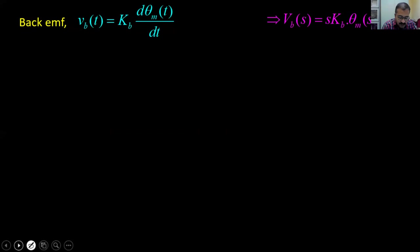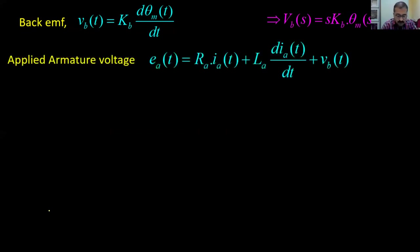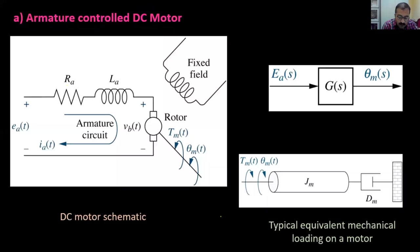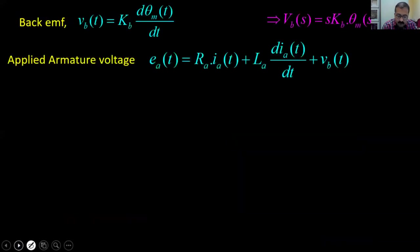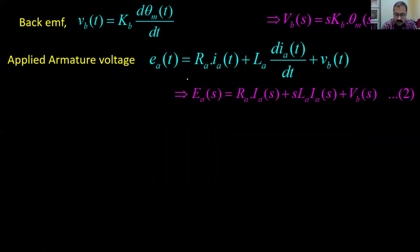The applied armature voltage Ea(t) equals Ra·Ia + La·dIa/dt + Vb(t). Taking the Laplace transform gives: Ea(s) = Ra·Ia(s) + La·s·Ia(s) + Vb(s). That is equation two.